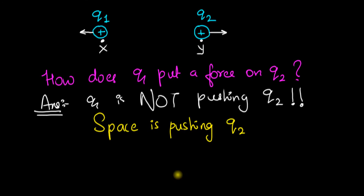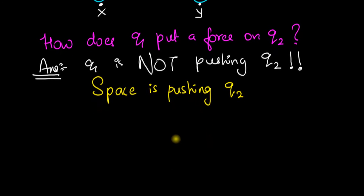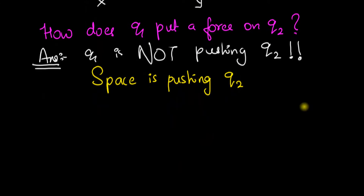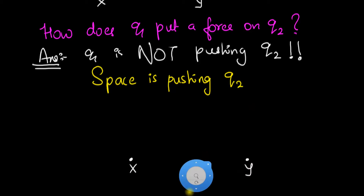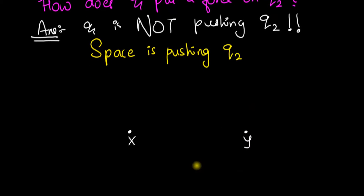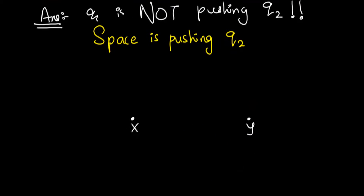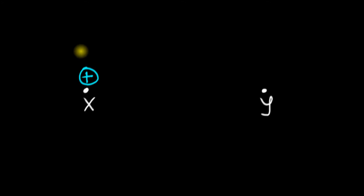Here's the mechanism. Let's assume that we put the charges one by one. So let's start with point X, and here is point Y. Let's put the first charge Q1 at X and see what happens. So we put charge Q1 over here.